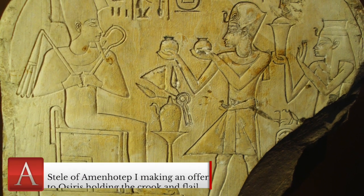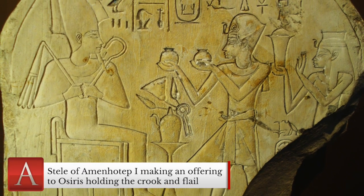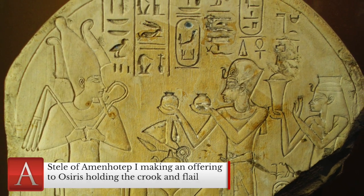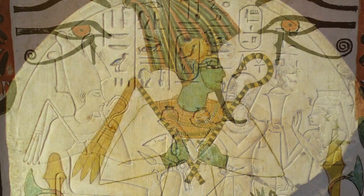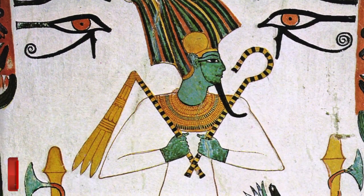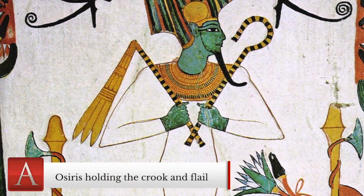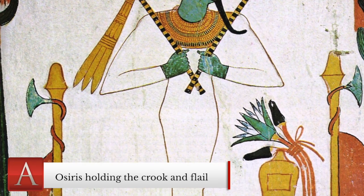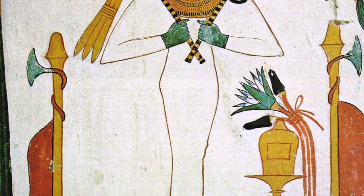The crook and flail commonly appear in the hands of the monarchs of Egypt from the early dynastic period through the Ptolemaic era. Both of these are symbols of agriculture associated with the first mythical god-king Osiris and represent kingship and care for the people. The crook was for herding sheep and the flail was for goats, and together in the king's hand, they assured the people that he was watching over and guiding them.